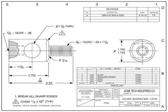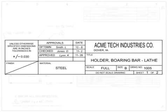The first place to look for information about a blueprint is on its title block. Most title blocks are located in the lower right-hand corner of the drawing. Although the title block information can vary by company, certain information is basic. The title block, at a minimum, contains a company's name and usually includes its logo and address.